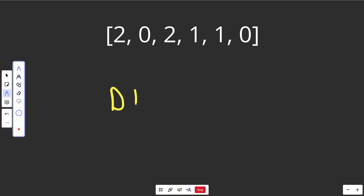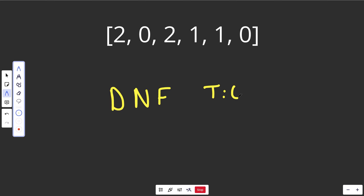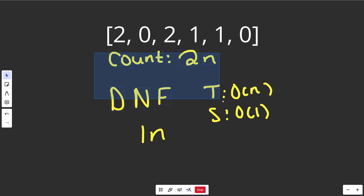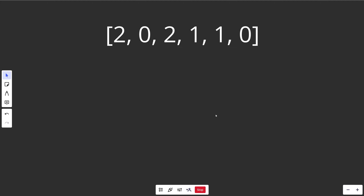There is one other approach called the Dutch National Flag Algorithm, basically designed to solve this exact problem. But there's really no reason to do it, because it's still O(n) time and O(1) space, and it's way harder to write. Counting sort is basically a two-pass solution — you count everything, then overwrite — while Dutch National Flag is one pass. But in the vast majority of coding interviews, they really won't care, so it's better to do counting sort, which is the more versatile solution.